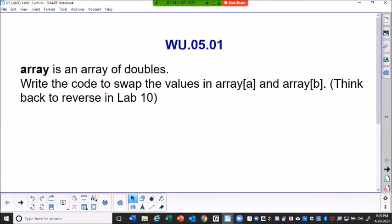Array is an array of double values. Then write the code to swap. Swap means you are going to change the values in two places. Switch, that means swap.